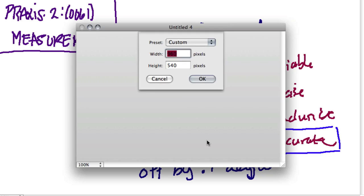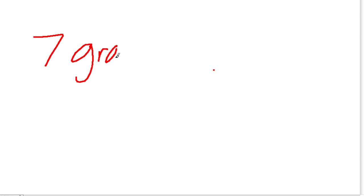Another interesting problem that confused me at first involves a pharmacist who measures the mass of a medical substance and uses the appropriate number of significant figures to record the mass as 7 grams. He's attempting to measure to the nearest gram. The question asks: which of the following most accurately expresses the range of possible values of the mass of the substance?